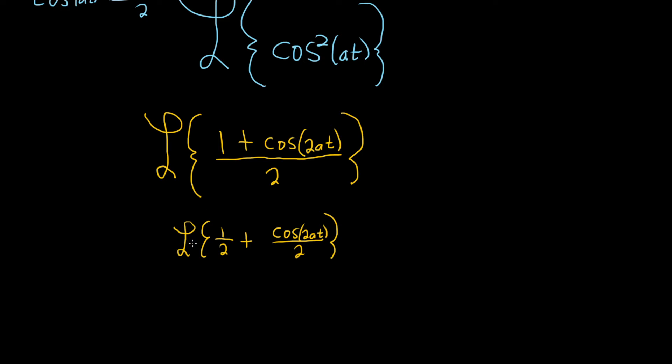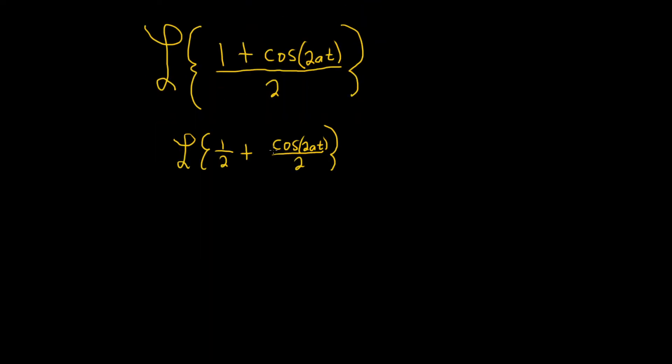The Laplace is linear, so we can break this up into two Laplace transforms and factor out constants. That gives us 1 half times the Laplace transform of 1 plus 1 half times the Laplace transform of cosine of 2at.